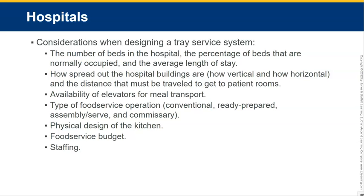Also consider the type of food service operation: conventional, ready-prepared, assembly-serve, or commissary. Conventional means making everything right now and serving it for breakfast, lunch, and dinner. Ready-prepared means cooking something today that you'll need in three days — blast chilling or blast freezing it, then reheating on the day needed. Assembly-serve means purchasing items that are already completely cooked, then warming and plating them. Commissary, like school systems, has one main kitchen that satellites food out to different locations.